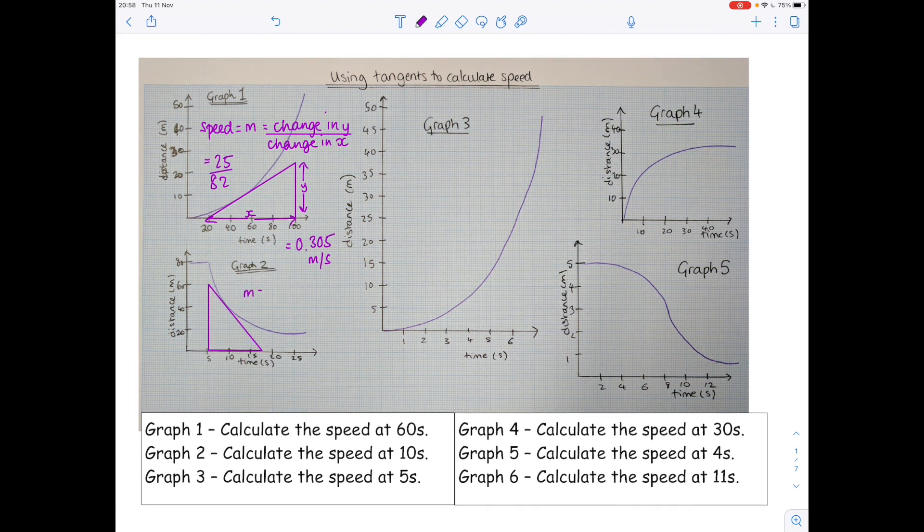So again we're after the gradient so that's that change in y. So from here to here which we can see is 60 over that change in x which is about 17.5 minus 5 equals 12.5, so I've read that off the x-axis to get an answer of 4.8 meters per second.